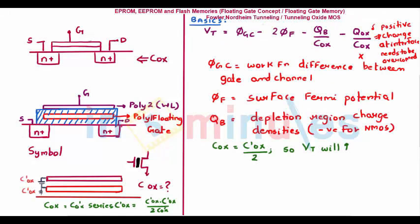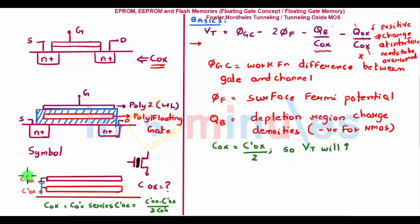To understand the threshold voltage, we need to understand its basics. In the equation, I am ignoring the positive charge at the interface term. QB — the depletion region charge density — is effectively negative for NMOS, so minus of minus becomes plus, making it a positive term. In a normal case, I have oxide capacitance as COX. In the case of a poly gate, COX would reduce by a factor of 2. Between my normal gate and my poly gate there is a capacitance C-OX due to the oxide present, and between the poly gate and the substrate there is another C-OX. These two C-OX values are connected in series, so effectively COX/2 becomes my new COX.